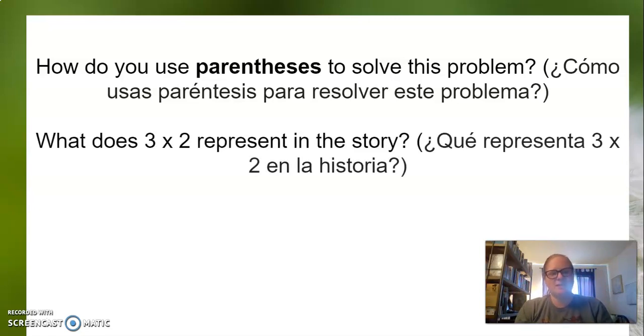What does three times two represent in the story? It said that Quincy, he played in three games and scored two goals each time. He played three soccer games, he scored two goals each time. So on the first game he scored two goals, second game he scored two goals, third game he scored two goals. So it would be two plus two plus two, or the same as three times two.